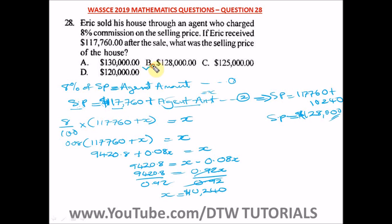The answer is option B — $128,000. This is quite straightforward; you just need to understand the question. There's a shortcut method for more advanced levels, but it's important to understand this approach. In real life, when an agent rents or sells a place for you, they take their commission and tell you the total price — this is exactly that kind of real-life situation interpreted as a math problem.